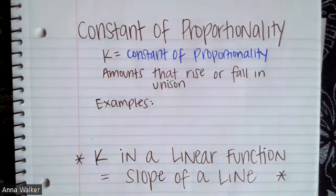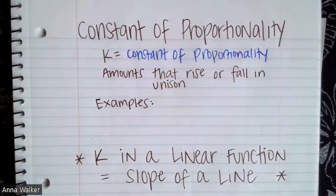It's a long word to write. And you may be thinking, well, why don't they just use C? Well, we use C to represent typically circumference when we're talking about circles. So K, constant, similar sounding letters.